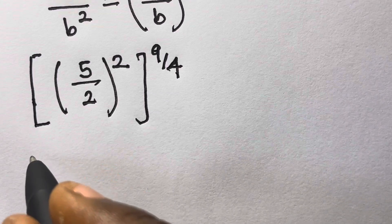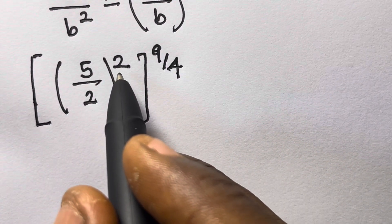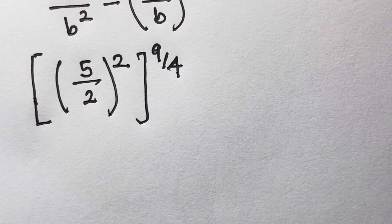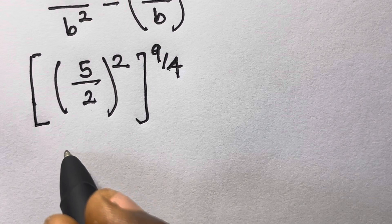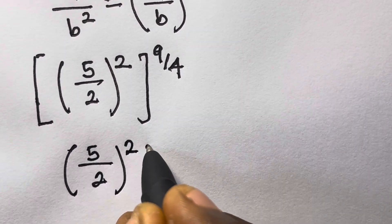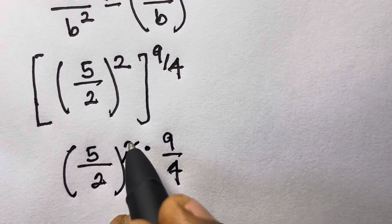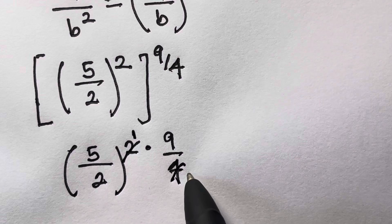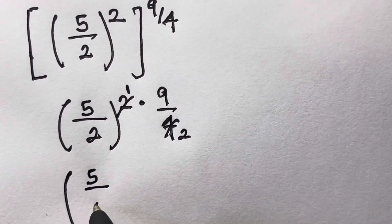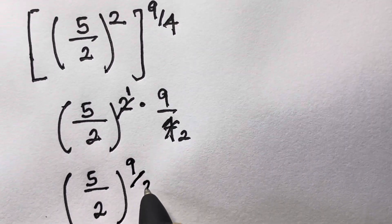From here, a number raised to a certain power which is again raised to another power — the powers are multiplied. So we have 5 divided by 2, squared, multiplied by 9 divided by 4. We can simplify 2 and 4: 2 over 4 gives 1 over 2. So we have 5 divided by 2, raised to the power 9 divided by 2.